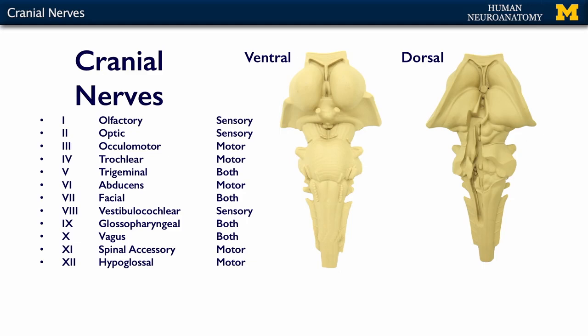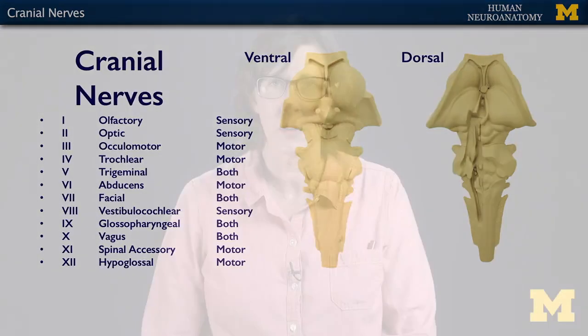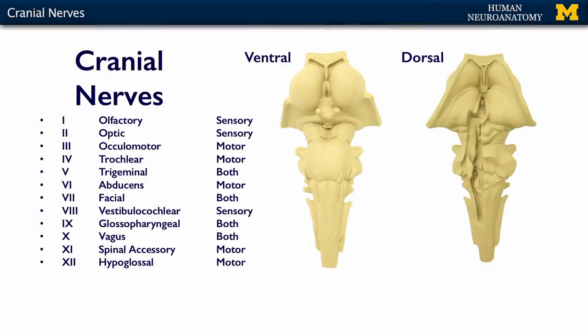The olfactory nerve is sensory and is responsible for your sense of smell. The optic nerve is also sensory and is how information gets from your retina back into your brain. The oculomotor nerve is motor, and it operates several of the muscles that move your eyeball around in the orbit. The trochlear is another motor nerve that innervates one specific extraocular muscle. The trigeminal nerve is mixed. The abducens nerve is motor, and it innervates one specific muscle, the lateral rectus.